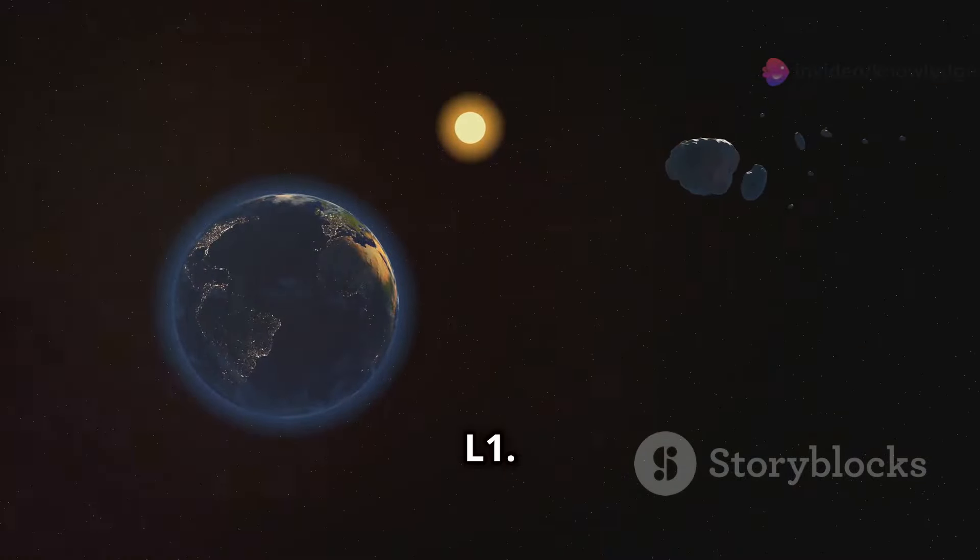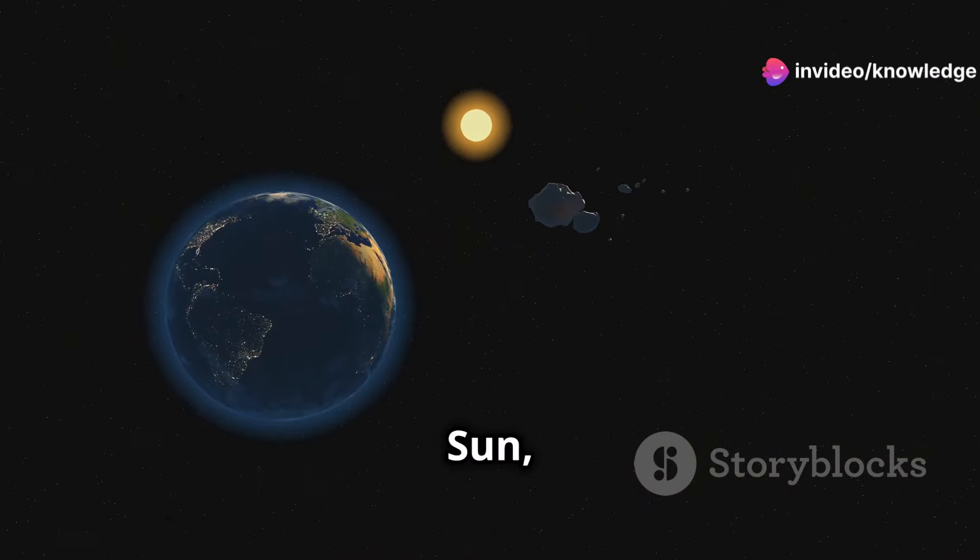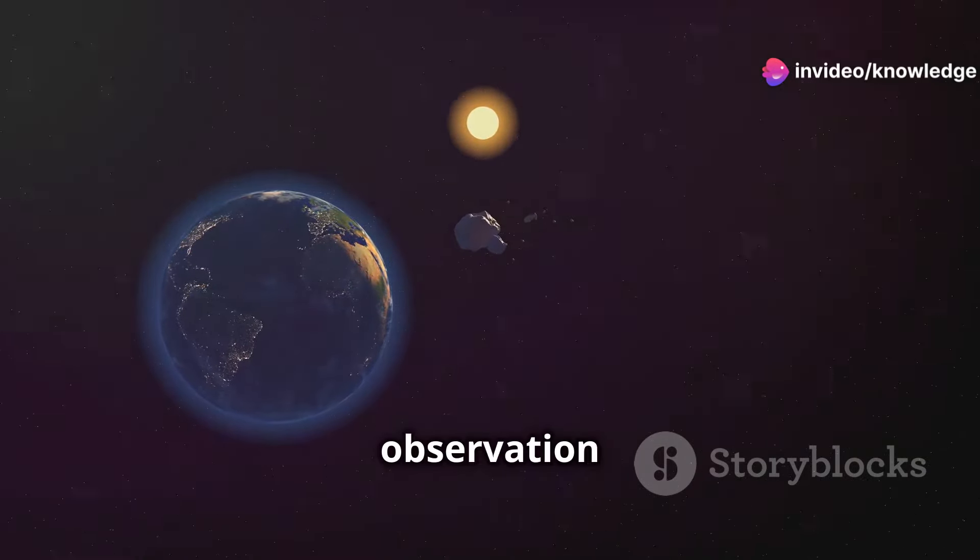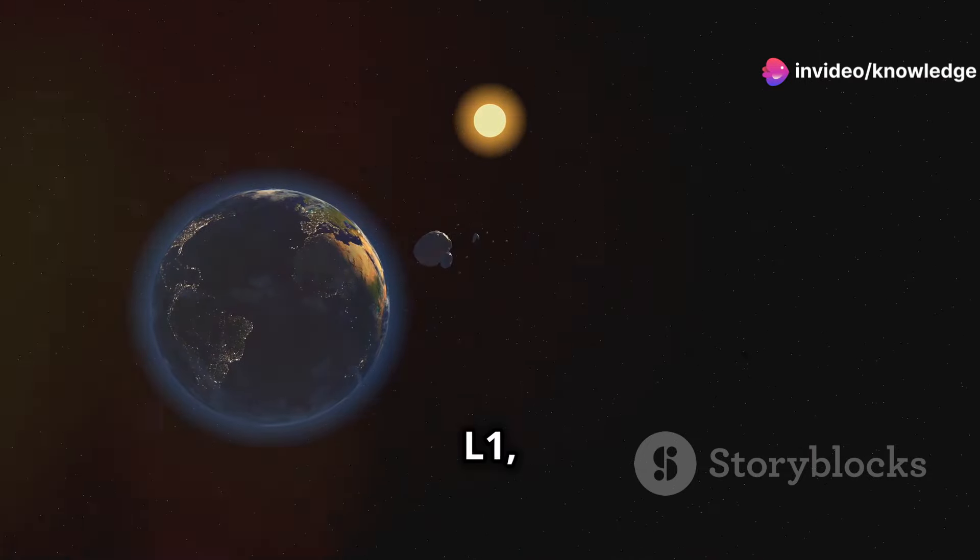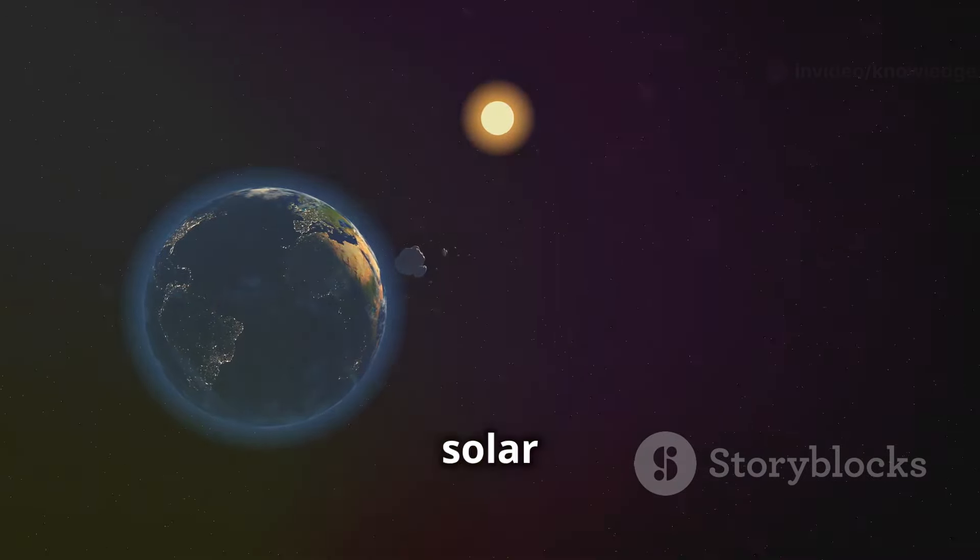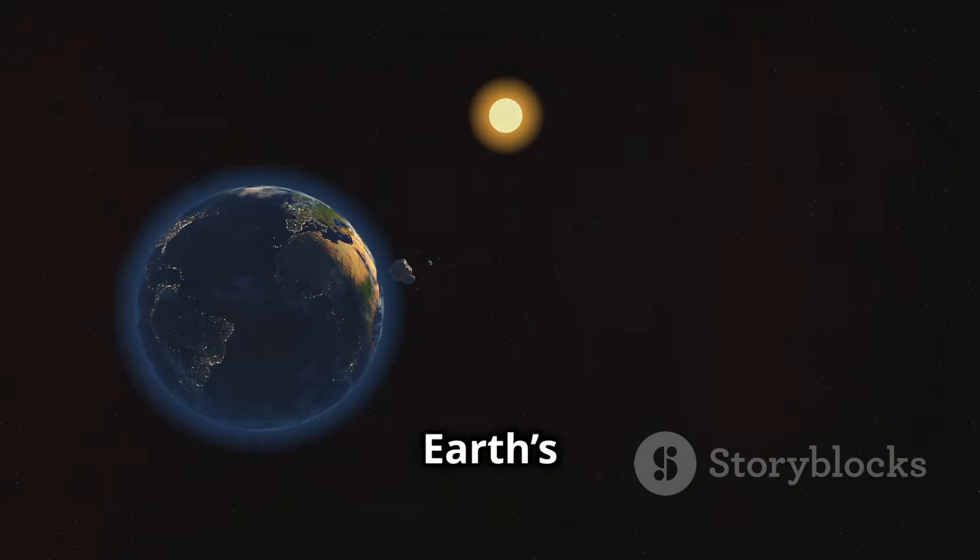First up we have L1. This point lies between Earth and the Sun, making it perfect for solar observation satellites. At L1, they can continuously monitor solar activity without the interference of Earth's atmosphere.